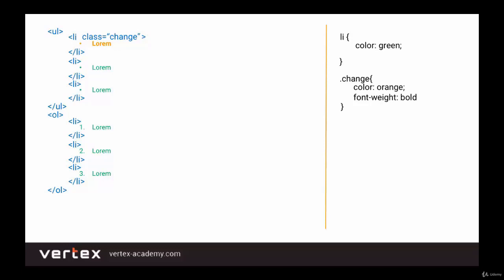Let's say we want the second element of the unordered list to also be orange and bold. Well, we don't have to write another class — we can simply use the same class a second time. Let's add that class here. Now it's also in orange and in bold. And say we want the first element of the ordered list to be both bold and orange — it's the same thing. We just need to add class with the name 'change', and as a result it's both orange and bold. Alright, so that part is clear. Now let's move on to the practice part.